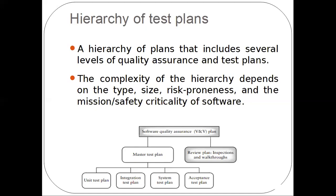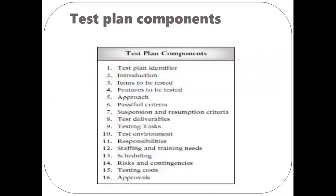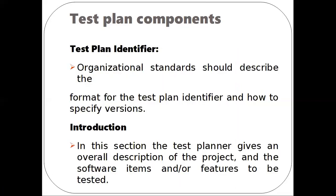Next we are going to see about the test plan components. There are 16 components in the test plan. The first one is the test plan identifier, which tells about the unique identifier for the associated project and is also related to the project history. We describe this identifier using the organizational standard, using a synopsis format, and specify the version. The second component is the introduction, where the test planner gives an overall description of the project, what software product is being developed, what software item is to be tested, and the features in scope.